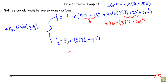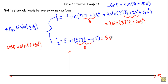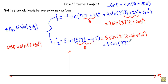Now, I2 is given in the form of cosine. To convert a cosine waveform into sine, I use the formula: sine of theta plus 90 degrees equals cosine theta. Considering the whole argument as theta, I can write I2 as 5 sine of 3770t minus 40 degrees plus 90 degrees, which gives us 5 sine of 3770t plus 50 degrees.